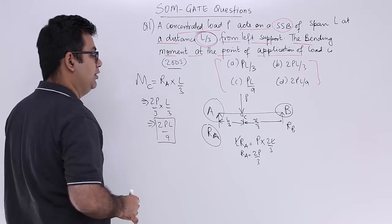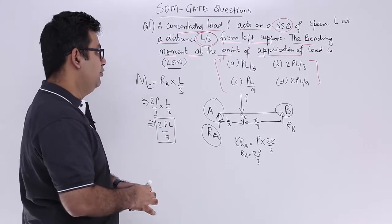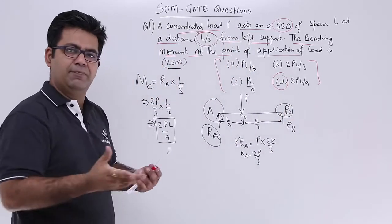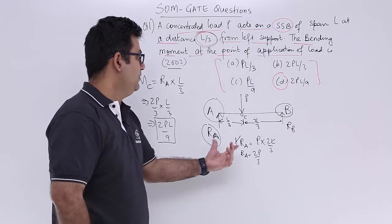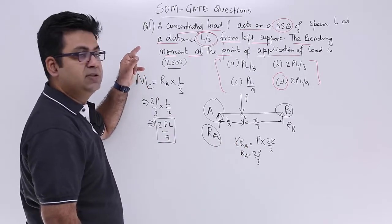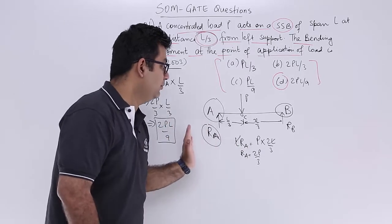So this is the answer that you need to get for this question and the answer would be option number D. So very simple question, just draw the simply supported orientation. You know that the distance is L by 3 from the left hand side.